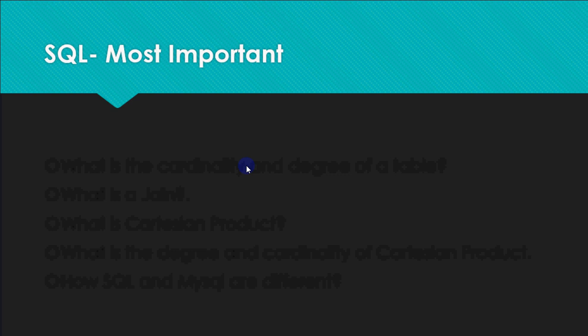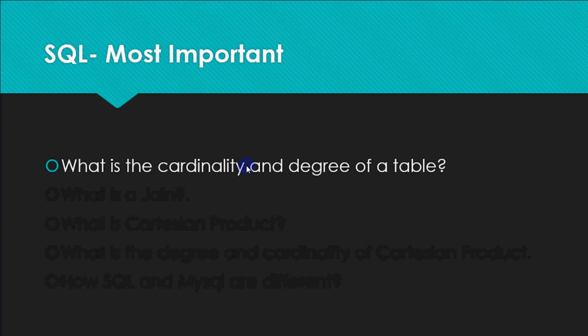To talk about SQL, we left with a very simple question that is what is cardinality and degree of a table but it's quite important. Cardinality is the number of rows in the table and degree is the number of columns in the table.